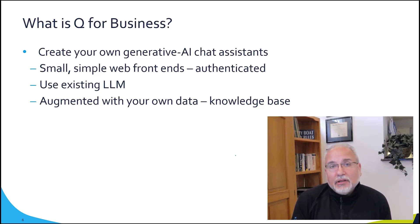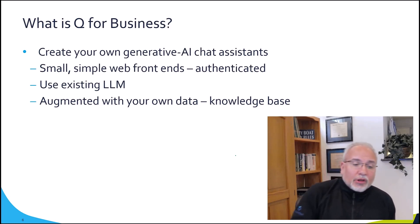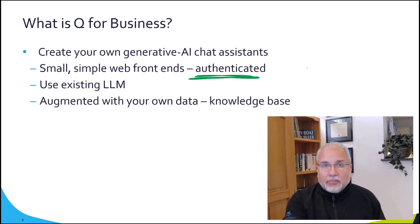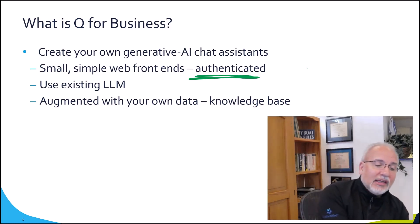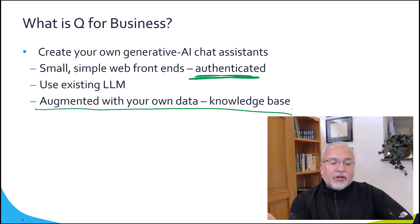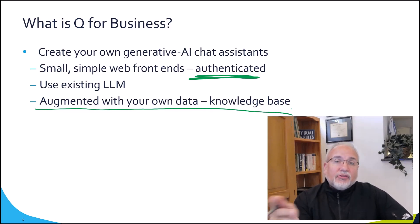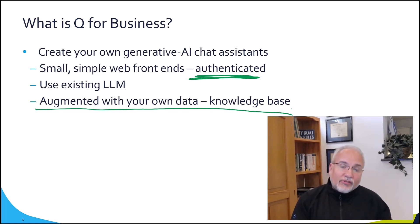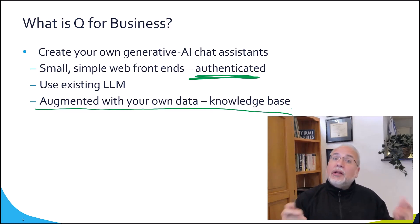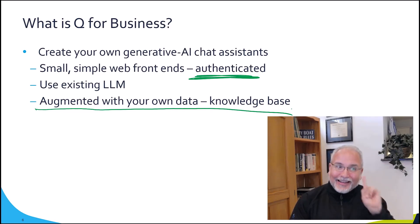Q for Business fundamentally lets you create your own generative AI chat assistant. It creates a simple little website with a chat assistant, a small web front end that you can plug in with whatever authentication mechanism you choose — in my demo I'll use IAM Identity Center. It makes use of an existing large language model, and you can augment it with your own data, called a knowledge base. That's the key bit: ChatGPT is free, but it doesn't know about your internal information — SharePoint, Salesforce, whatever. Q for Business lets you create something that works like ChatGPT but has access to your internal information.